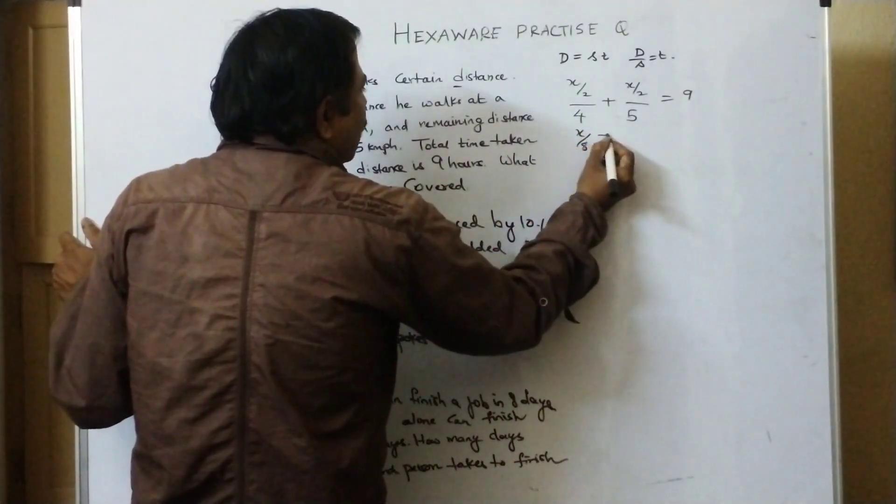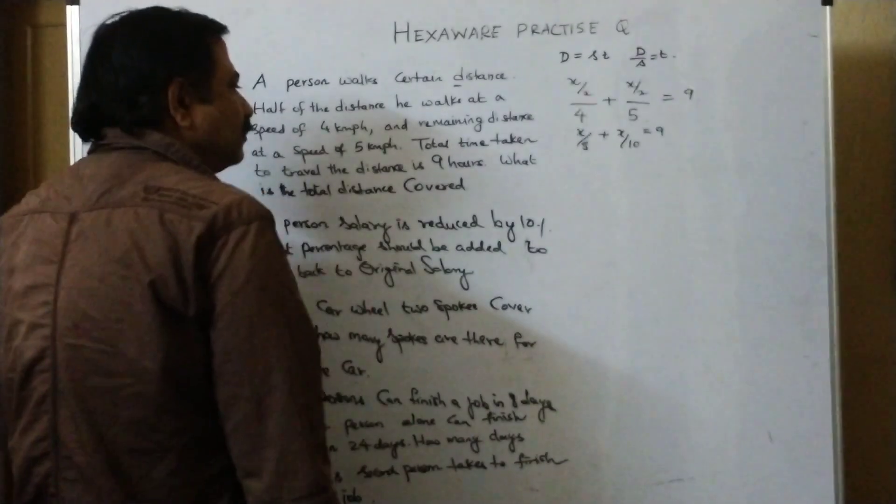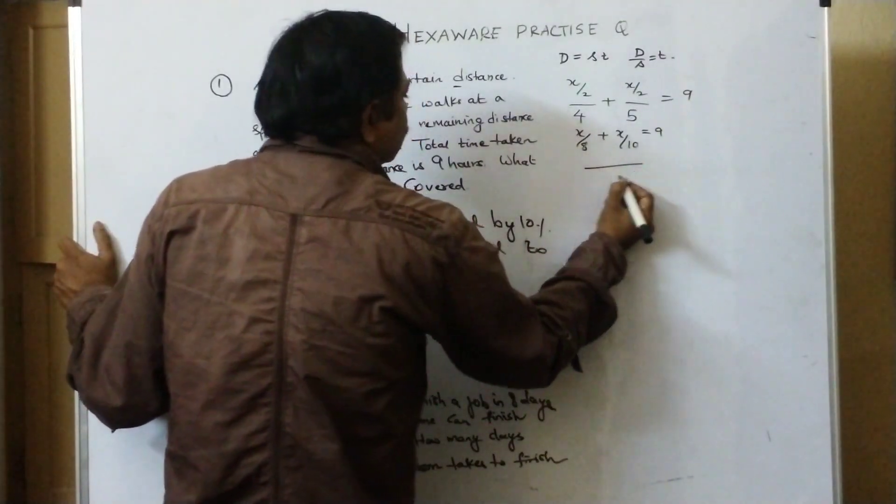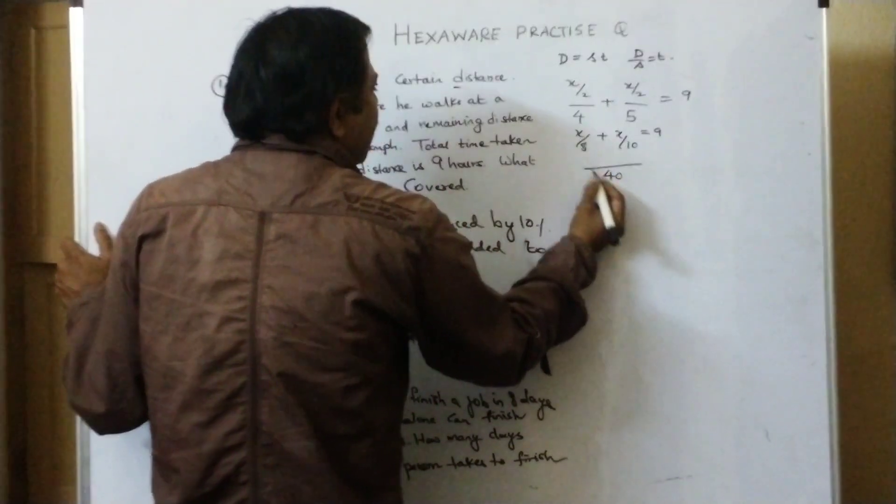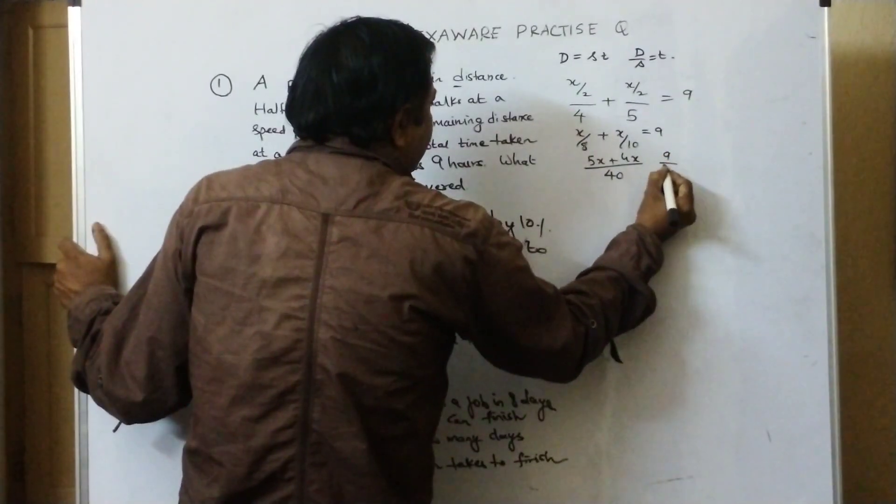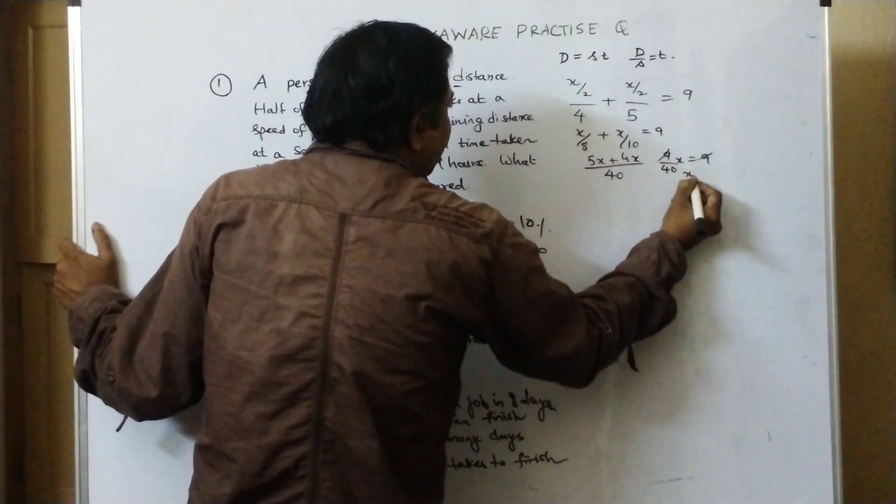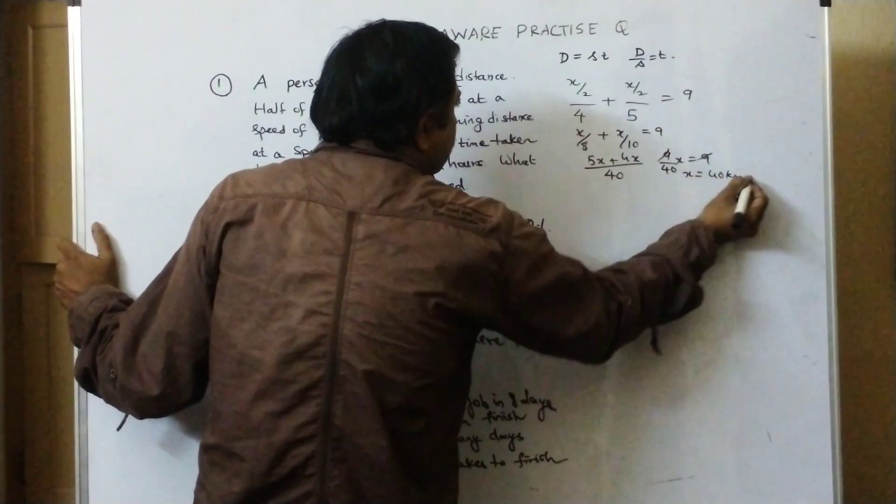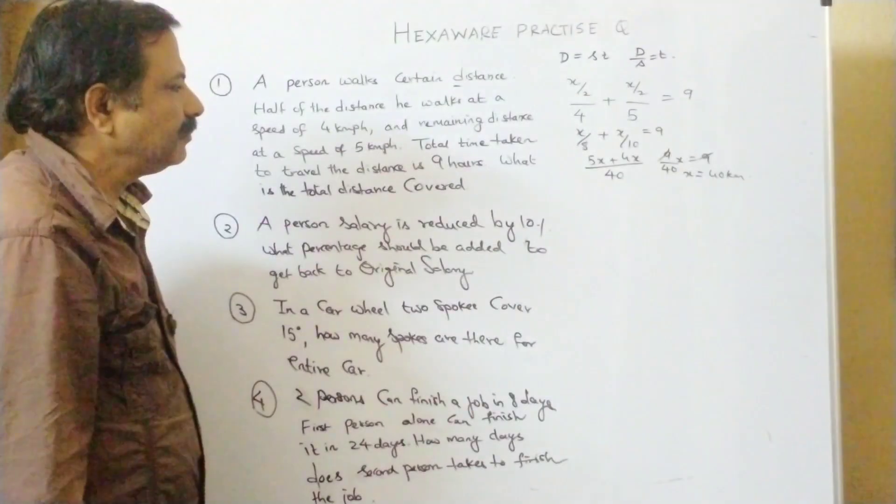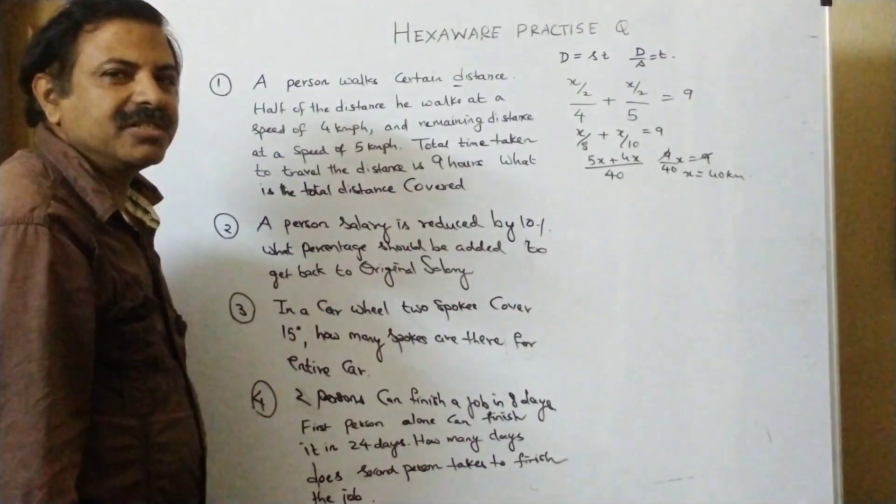x by 8 plus x by 10 is equal to 9. 10 and 8, 40 is the LCM. 5x plus 4x, so 9 by 40 x is equal to 9. x is equal to 40 km. So 40 km. Hope this question is clear for all of you.